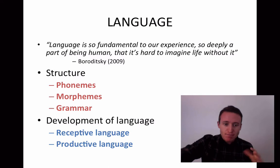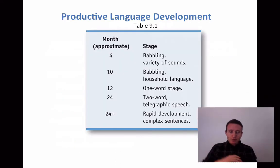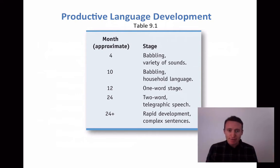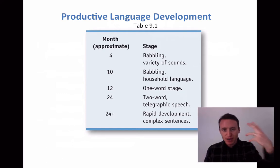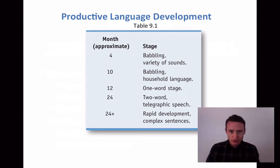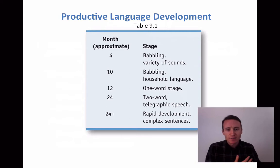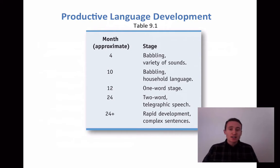What we're going to focus on mostly is the productive side of language — and this is just average development, since children always develop faster or slower. On average, by four months of age, babies start babbling. Babbling goes beyond just making noise. Young children in the first and second months of life will start to coo — cooing is like 'ahs' and 'oohs.'